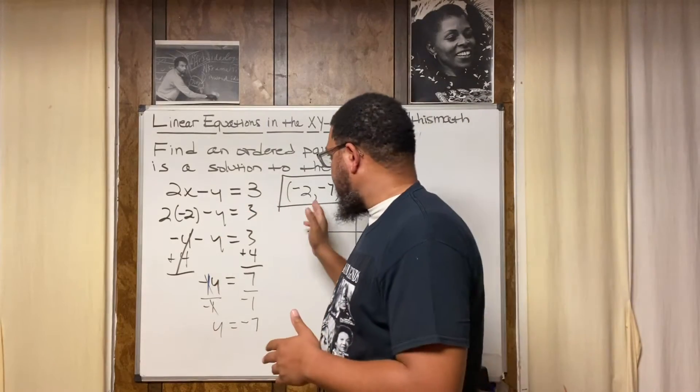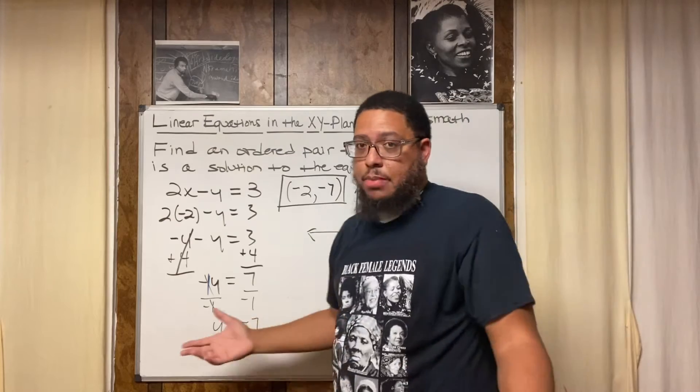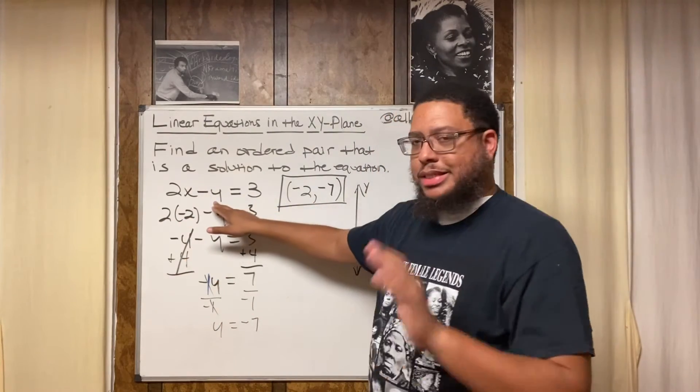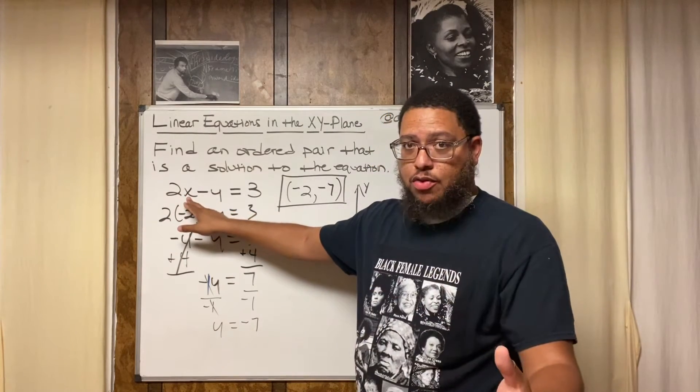As I said, when you're trying to find an ordered pair that's a solution to the equation, it creates a true statement. So how do I know this is a solution? Let's go back and make sure because I might have made a mistake somewhere. I'm human, I make mistakes. So let's plug in the x value and the y value and see what happens. Two times negative two is negative four.